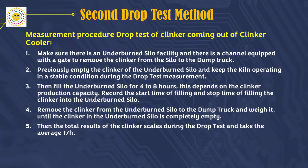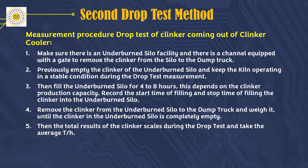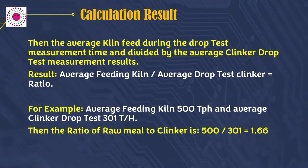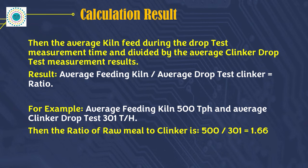Remove the clinker from the underburn silo to the dump truck and weigh it until the underburn silo is completely empty. Then take the total clinker weight from the drop test and calculate the average tons per hour, and record the average kiln feed during the drop test measurement period.